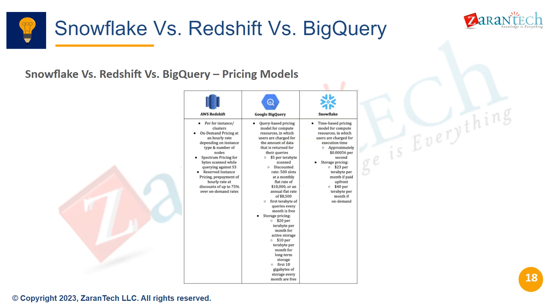This summarizes the pricing models. Snowflake uses per-second billing, Redshift has an hourly model, and BigQuery is based on data processed.